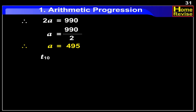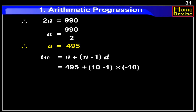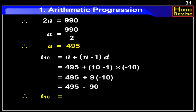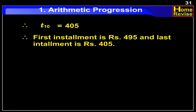Now, T10 is equal to A plus (N minus 1) into D, which is equal to 495 plus 9 into minus 10, equal to 495 minus 90. Therefore, T10 is equal to 405. Therefore, the first installment is Rs. 495 and the last installment is Rs. 405.